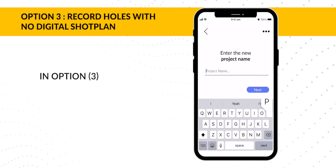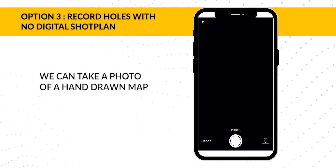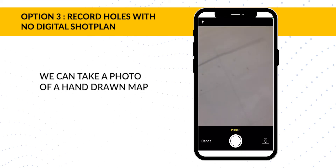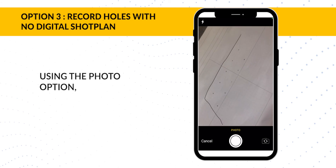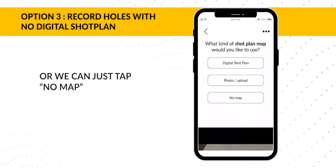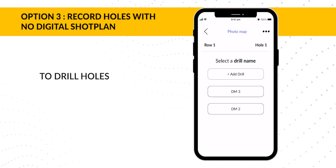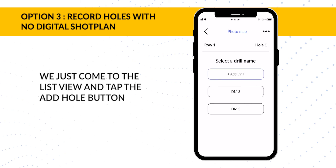Now for option three, if we don't have time to make a digital shot plan, we can take a photo of a hand-drawn map using the Photo option, or we can just tap No Map. To drill holes, we just come through to the list view and tap the Add Hole button.